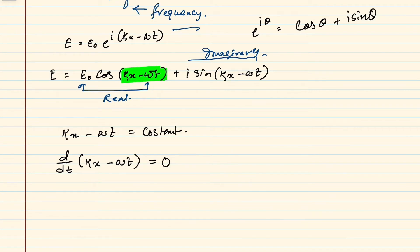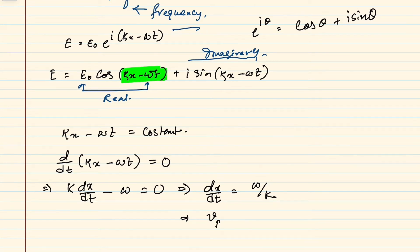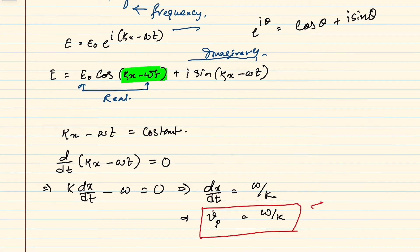Taking the time derivative of the phase and setting it equal to zero, after differentiation with respect to time we get k(dx/dt) minus omega equals 0. This implies dx/dt equals omega/k, and this is nothing but the phase velocity v_p. This is called phase velocity.